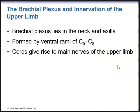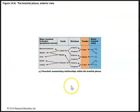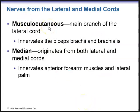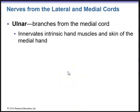The brachial plexus lies in the neck and the axilla, formed by the ventral rami of C5 to C8. The cords give rise to the main nerves of the upper limb. Some of the key nerves include the musculocutaneous nerve, which is the main branch of the lateral cord — it pierces the coracobrachialis muscle and innervates the biceps brachii and brachialis. The median nerve, originating from both the lateral and medial cords, innervates the anterior forearm muscles and the lateral palm. The ulnar nerve, branching from the medial cord, innervates the intrinsic hand muscles and skin of the medial hand.